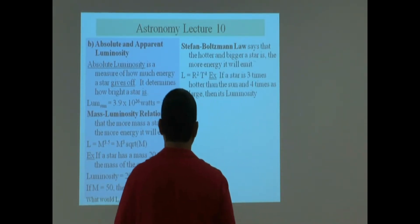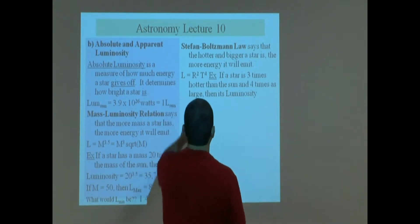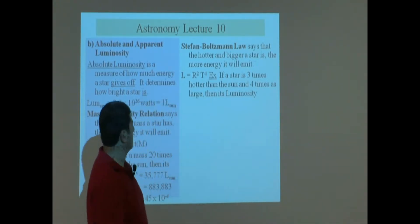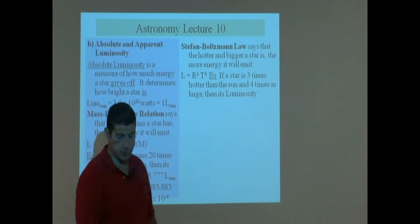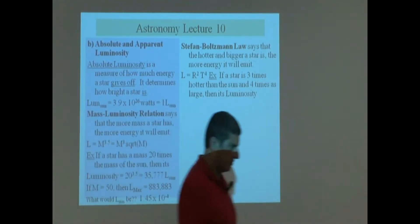The equation is L equals R squared times T to the power of four. Luminosity is radius squared times T to the power of four.